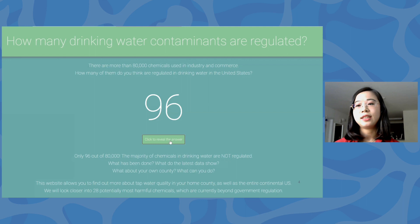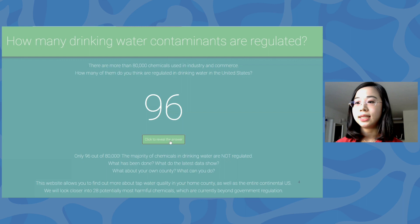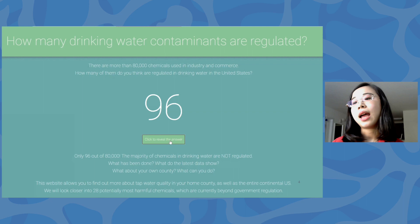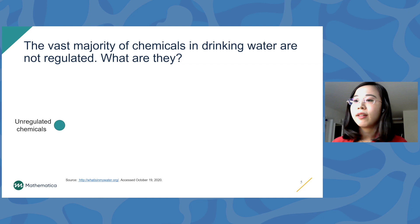In 1996, the Safe Drinking Water Act was amended to include an Unregulated Contaminant Monitoring Rule program. This program requires the EPA — the Environmental Protection Agency — to collect data for chemicals suspected to be present in drinking water but for which we don't yet have health-based standards. Every five years, 30 contaminants will be monitored. We know the vast majority of chemicals in drinking water are not regulated, so what are they?